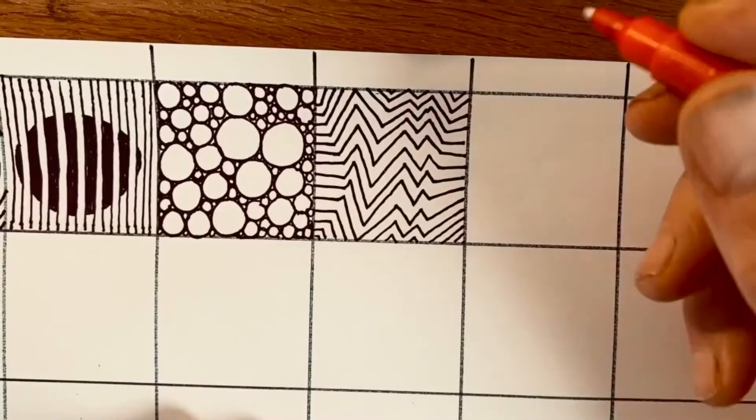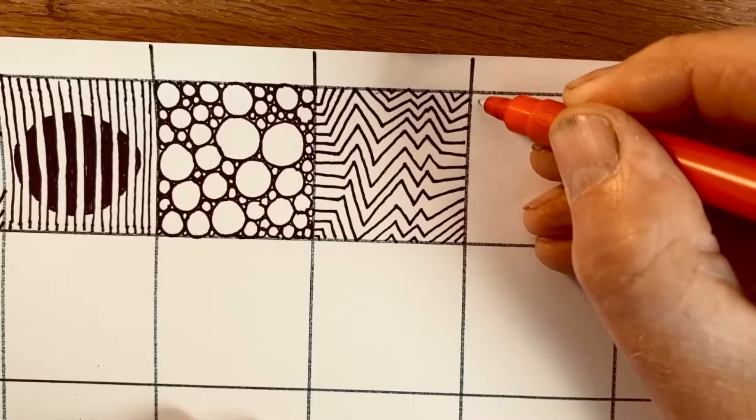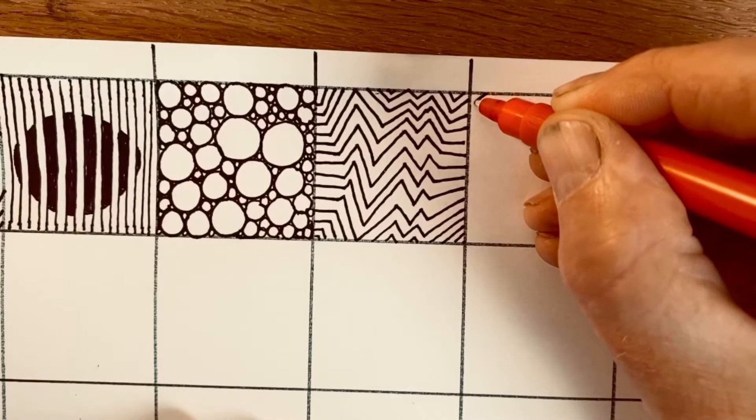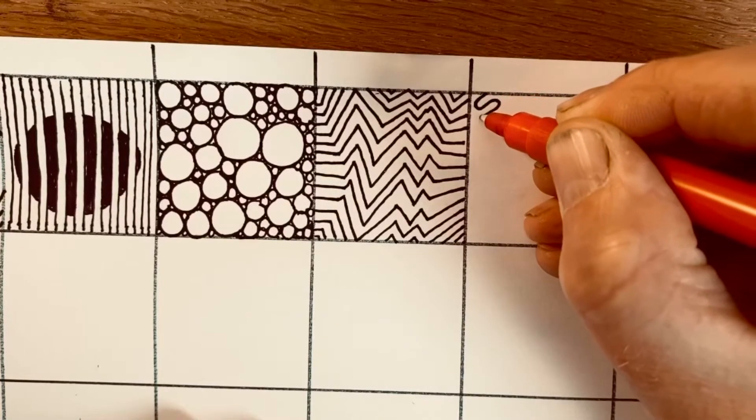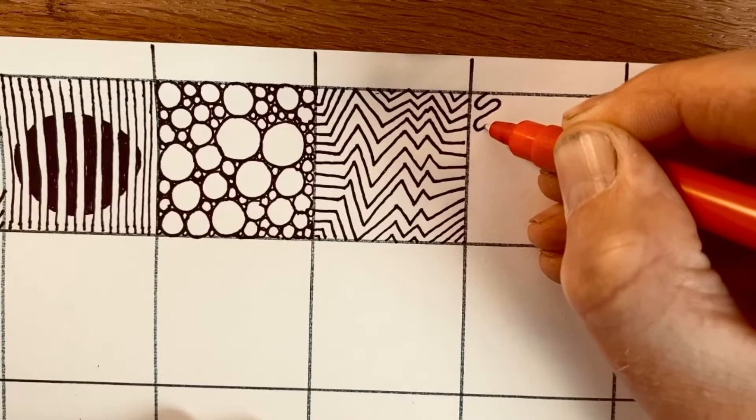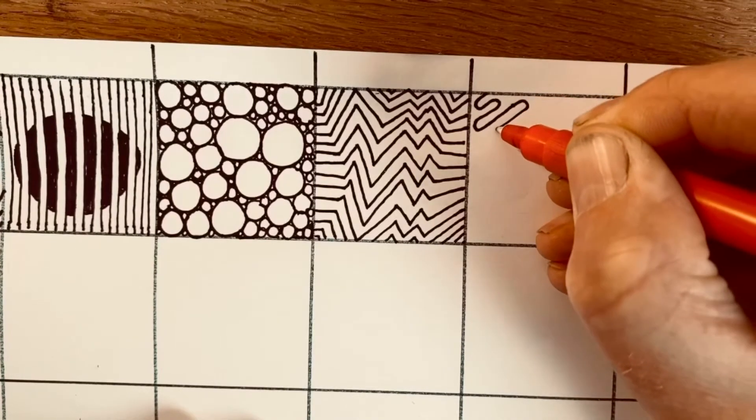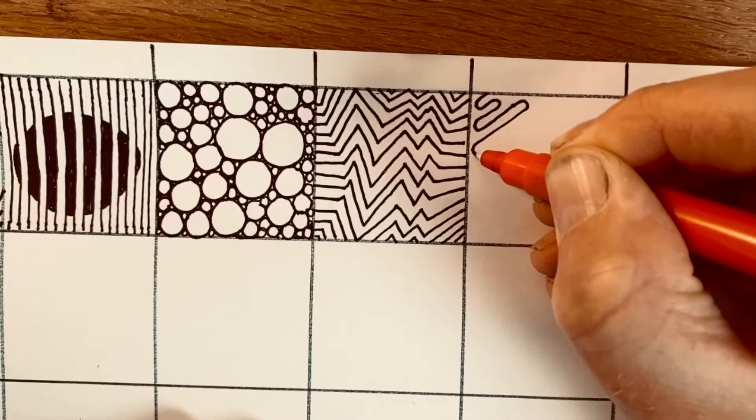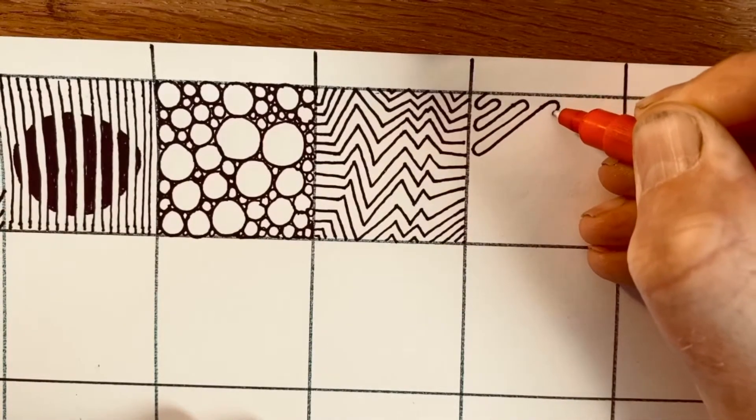So today I'm going to draw one continuous line from the top left corner to the bottom right corner and it's going to curl around without touching the edges and without touching itself and move in a diagonal direction like this. You could do the same vertically or horizontally.